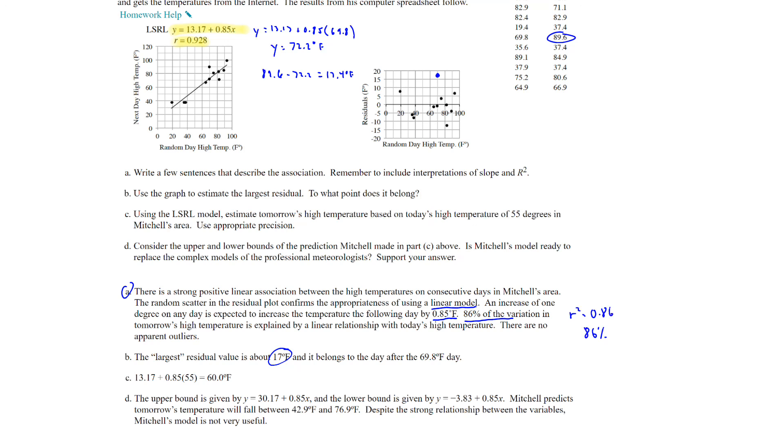And then D, consider the upper and lower bounds of the prediction Mitchell made in part C above. Is Mitchell's model ready to replace the complex models of the professional meteorologist? So it says the upper bound is given by y equals 30.17 plus 0.85x. And the lower bound is given by y equals negative 3.83 plus 0.85x. And so Mitchell predicts tomorrow's temperature will fall between 42.9 degrees Fahrenheit and 76.9 degrees Fahrenheit. So despite this strong relationship between the variables, Mitchell's model is not very useful because looking at the spread here between the upper and the lower bounds, that's just way too much to make a good prediction. So his model was not going to be very useful, but it was a good attempt.